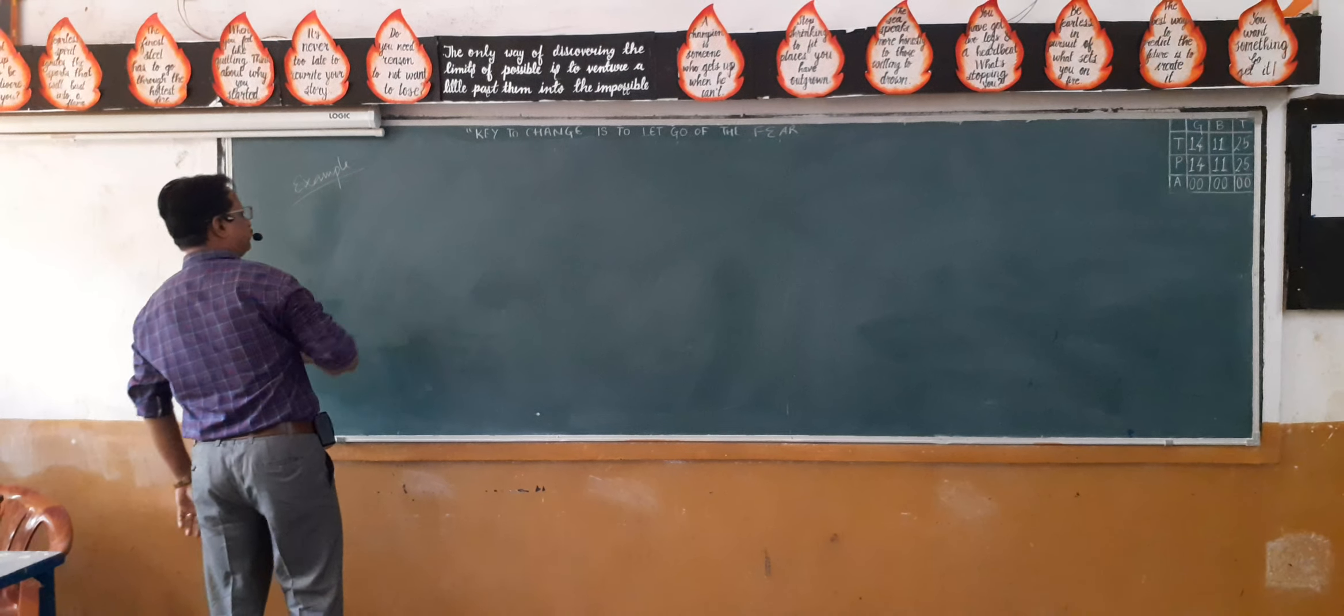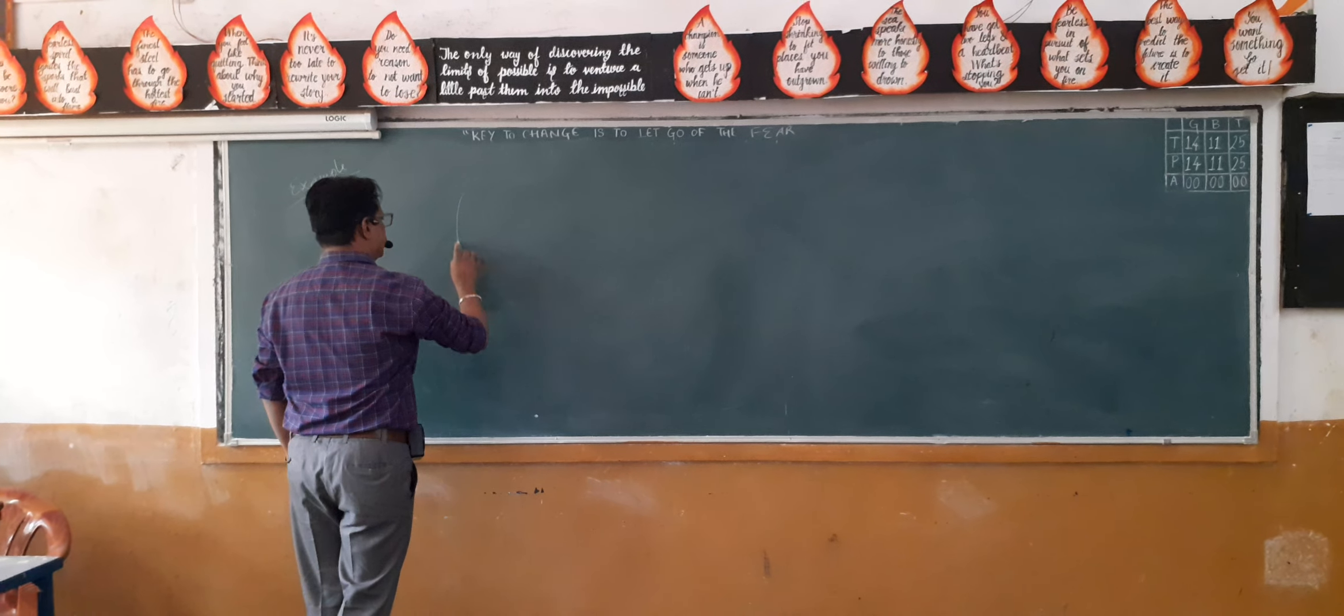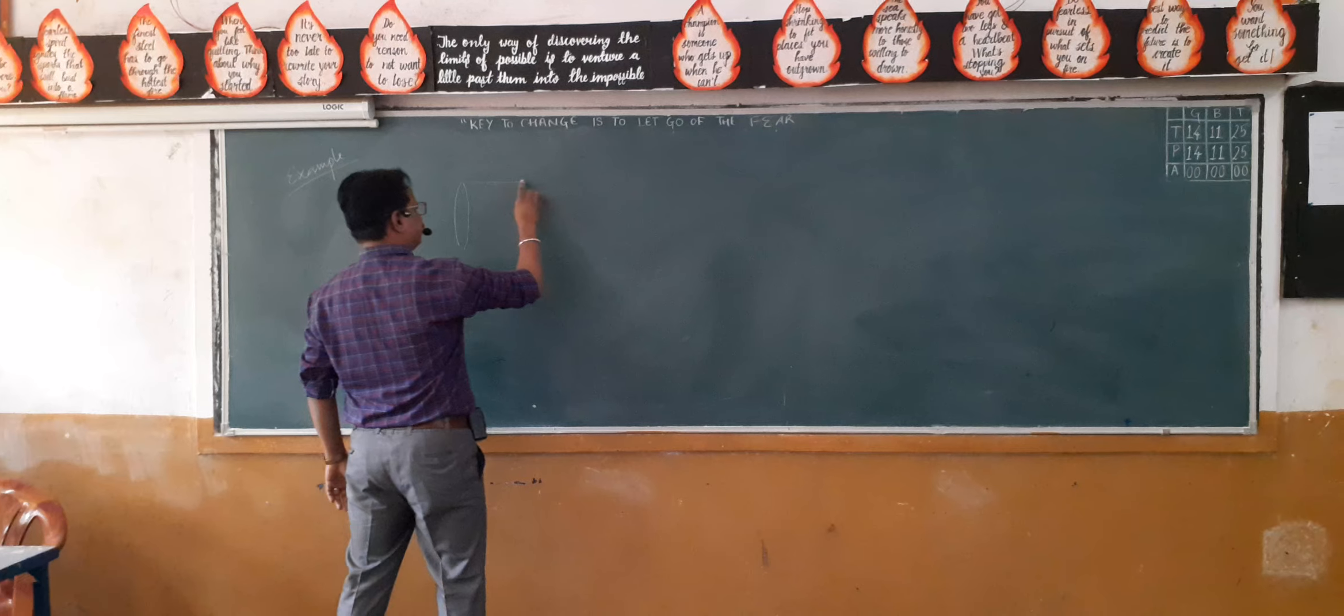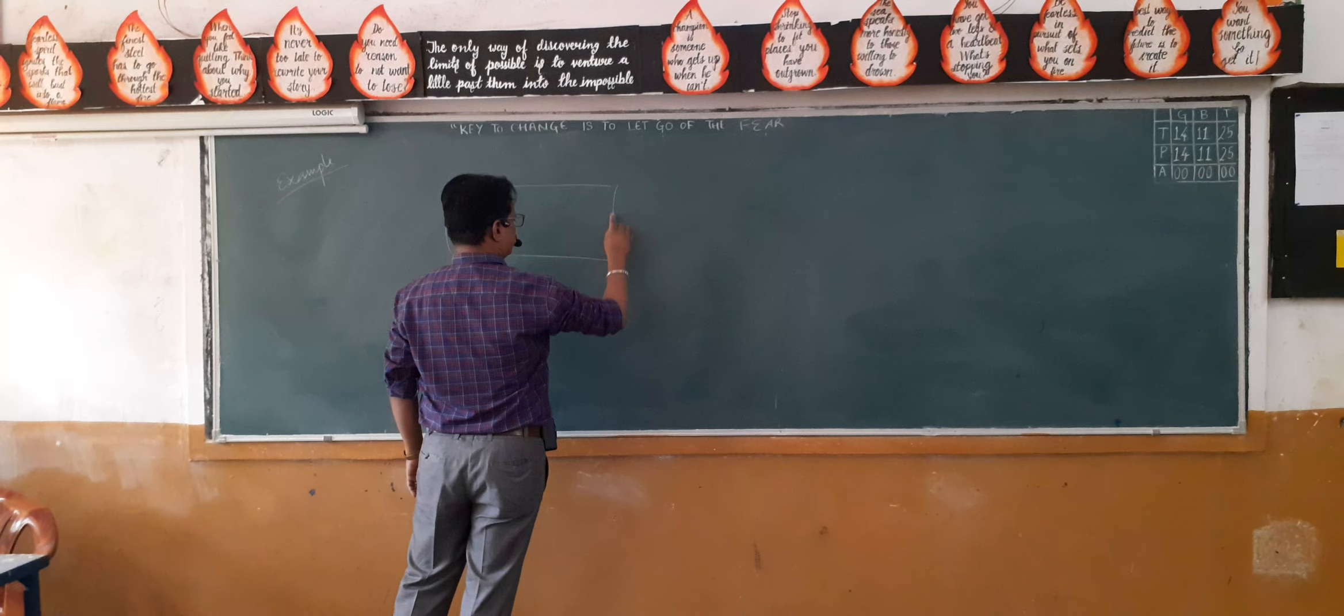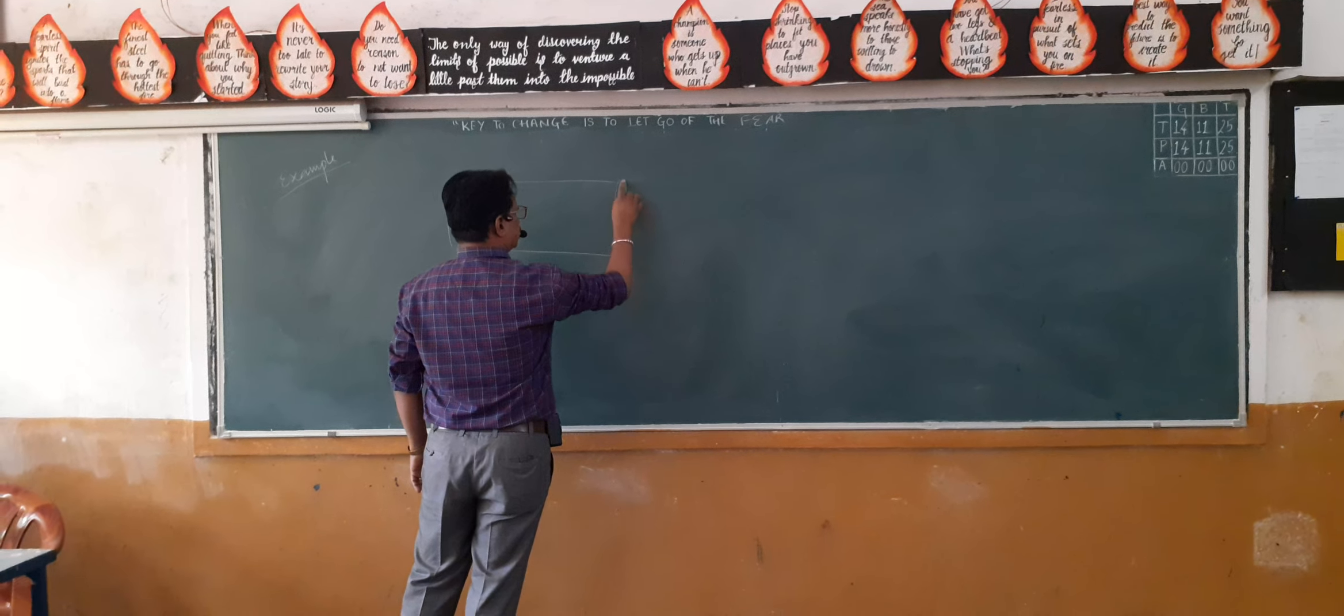You must have seen this example in many books, but nobody gives any clarification regarding why we should take normal inwards or why we should take normal outwards. So for simplicity, I am considering a cylindrical surface and there is electric field from left to right as shown.